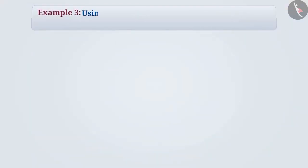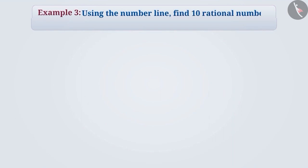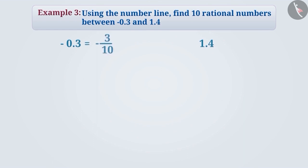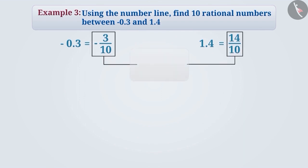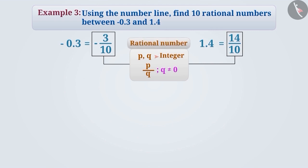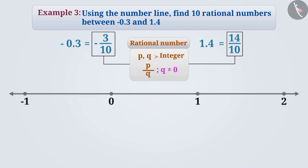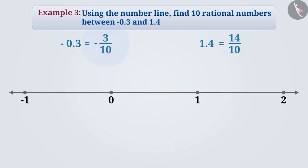Next example: using the number line, find 10 rational numbers between minus 0.3 and 1.4. We can express minus 0.3 and 1.4 as minus 3 by 10 and 14 by 10 respectively. In this way, we can express these numbers in the form of p by q where both the numerator and denominator are integers and the denominator is not 0. Therefore, these are both rational numbers. Let's denote them on the number line.